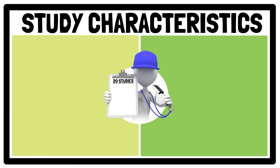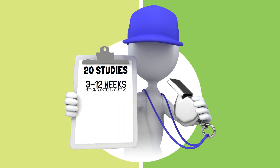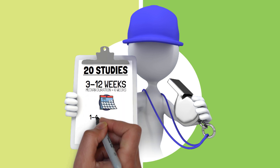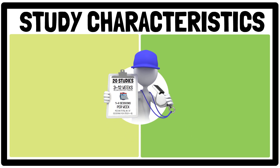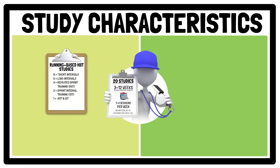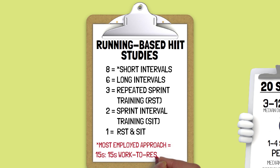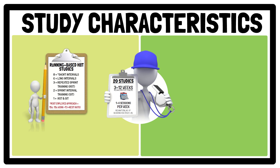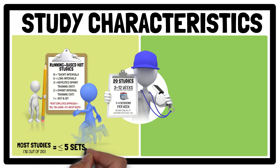Across the 20 studies, interventions ranged between 3 to 12 weeks, with weekly frequency ranging from 1 to 4 sessions per week. For running-based HIIT interventions, short intervals were most common, typically involving 15 seconds on and 15 seconds off. The number of sets varied from 1 to 10 across studies, however most involved 5 or fewer sets per session.